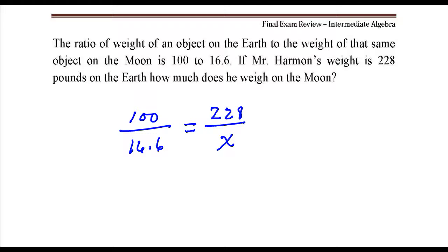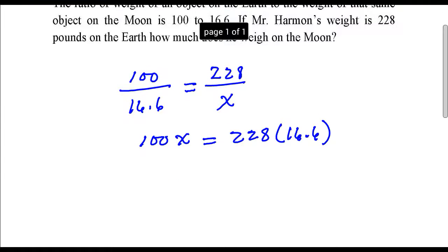To solve for x, his weight on the Moon, we would go ahead and cross multiply. So x times 100 is equal to 228 times 16.6, and then if I want x by itself, I'll just divide both sides by 100.